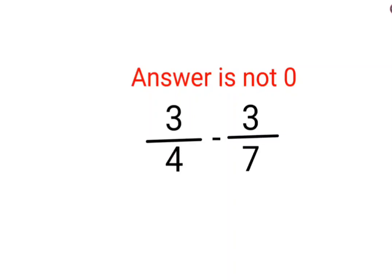Welcome everyone, so today we are going to understand why the answer for this question is not supposed to be 0. We have 3 upon 4 and 3 upon 7 and then we have minus.